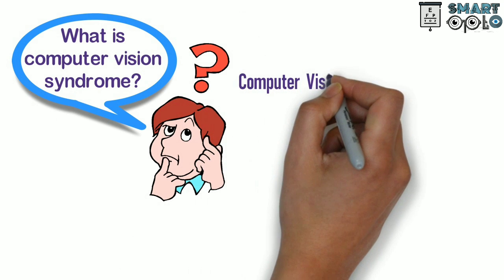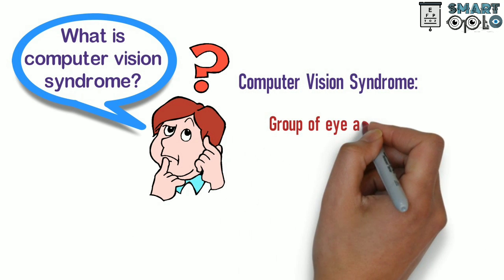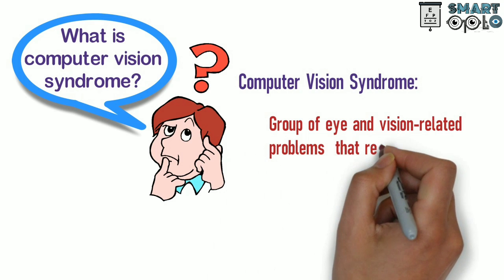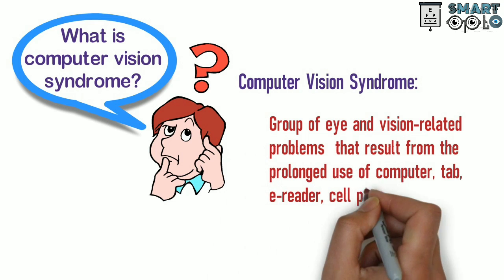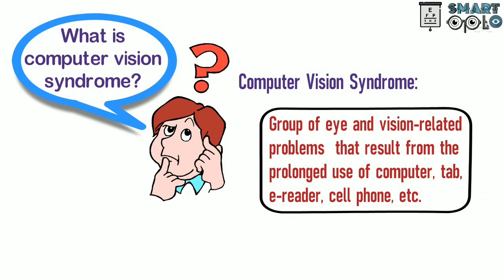Now let's see what is computer vision syndrome. Computer vision syndrome is the group of eye and vision related problems that results from prolonged use of computer, tablet, e-reader, cell phone, etc.